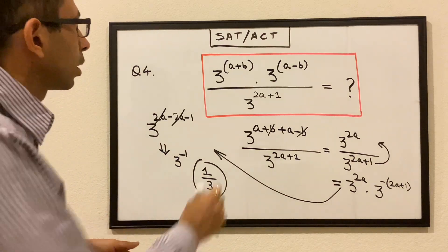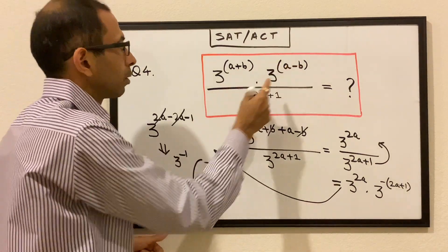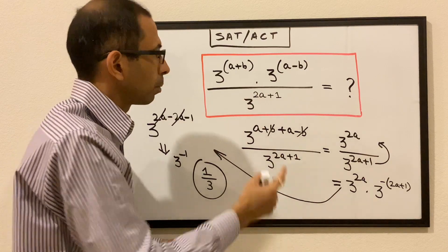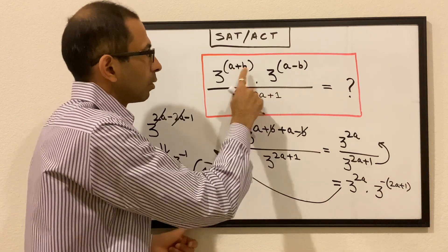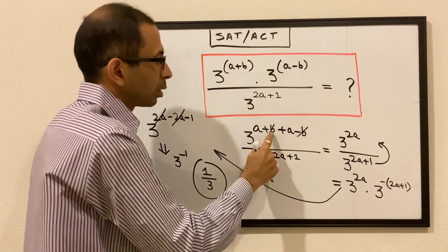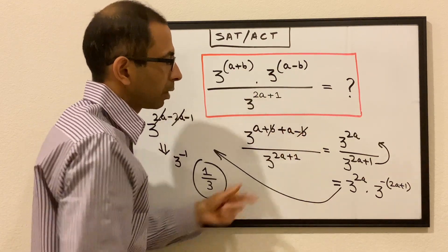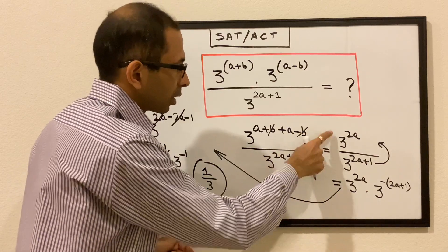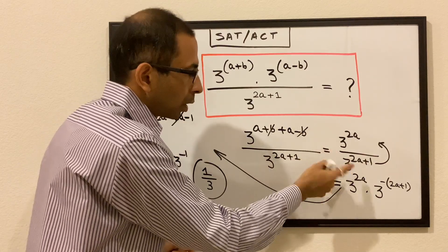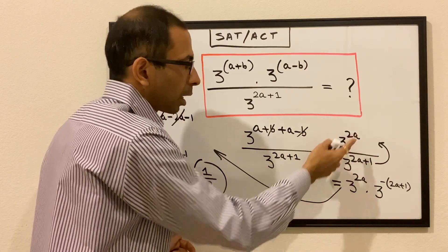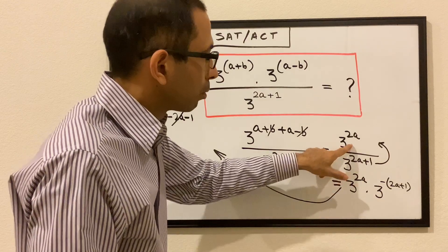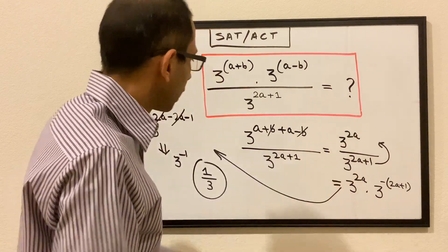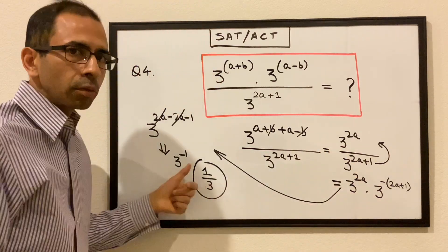To reiterate: we added the powers in the numerator because two terms with the same base were being multiplied. The b terms cancelled, giving 3^2a. We then moved the denominator up, changing the sign of its exponent, and the 2a terms cancelled, leaving 3^(−1), which is 1 over 3. We could have moved the numerator down and obtained the same answer.